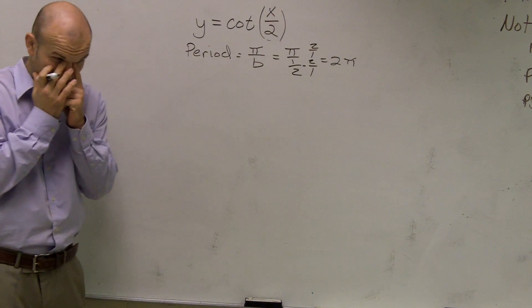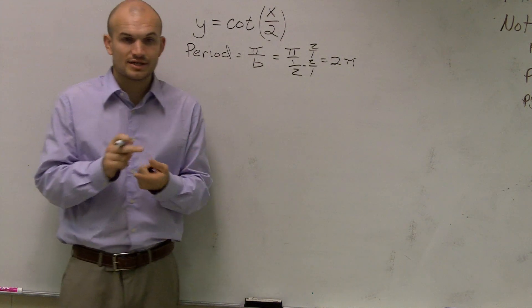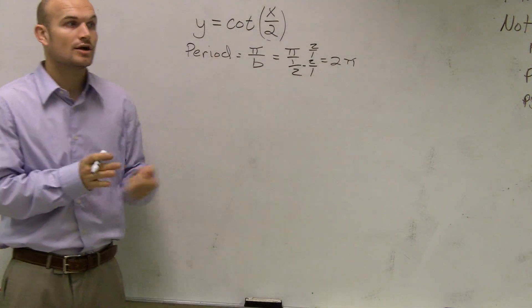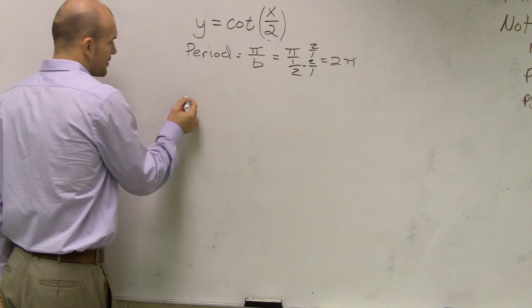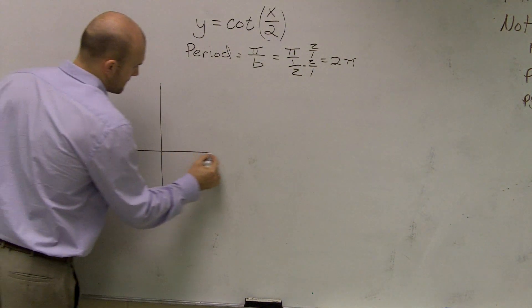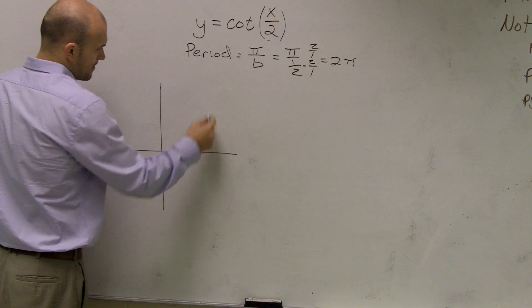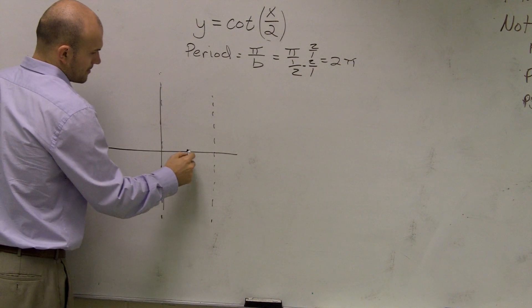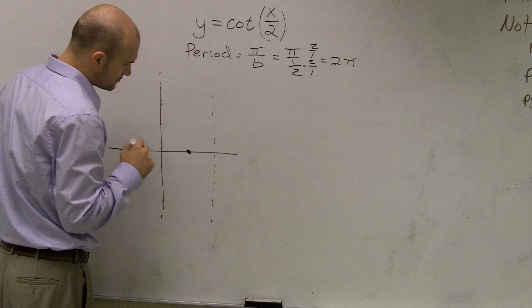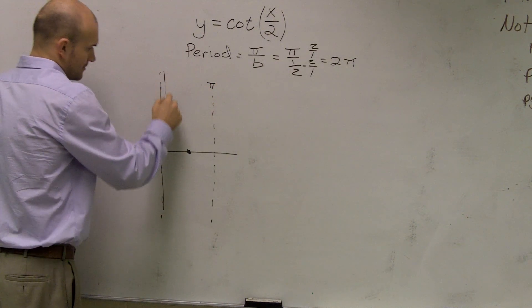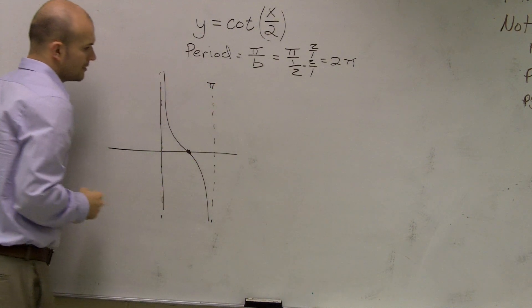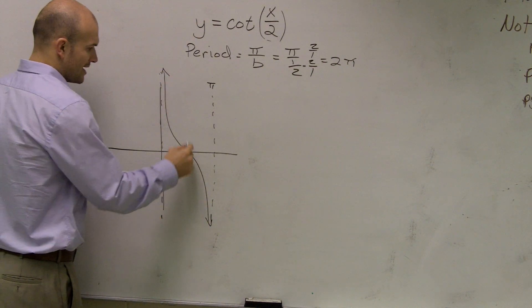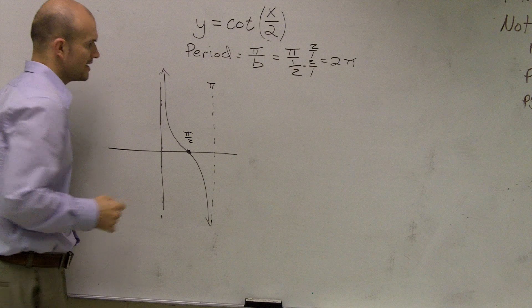Now the next thing what we need to do is we need to determine our cotangent and our tangent both can have asymptotes. Our graph is going to approach our two lines. Now, in our parent graph, I'll graph the parent graph here real quick. Our parent graph, there's that π. So there's our cotangent graph between our 0 and π across that π over 2, with the period of π.